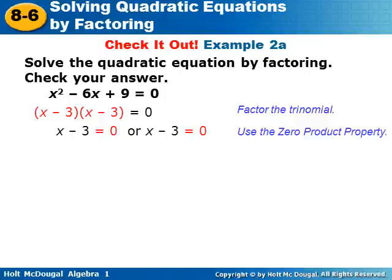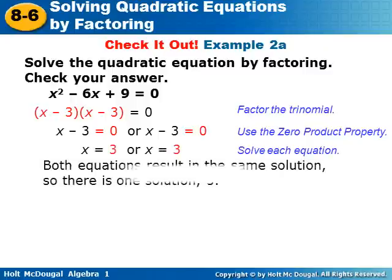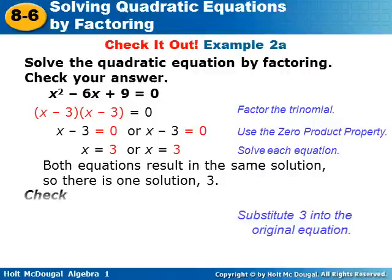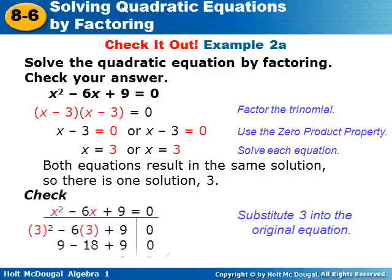We apply the zero product property: x minus 3 equals zero, or x minus 3 equals zero. Since they're the same, we only need to solve once and get x equals three. Then we substitute three back into the original equation to check, and it comes out equal.